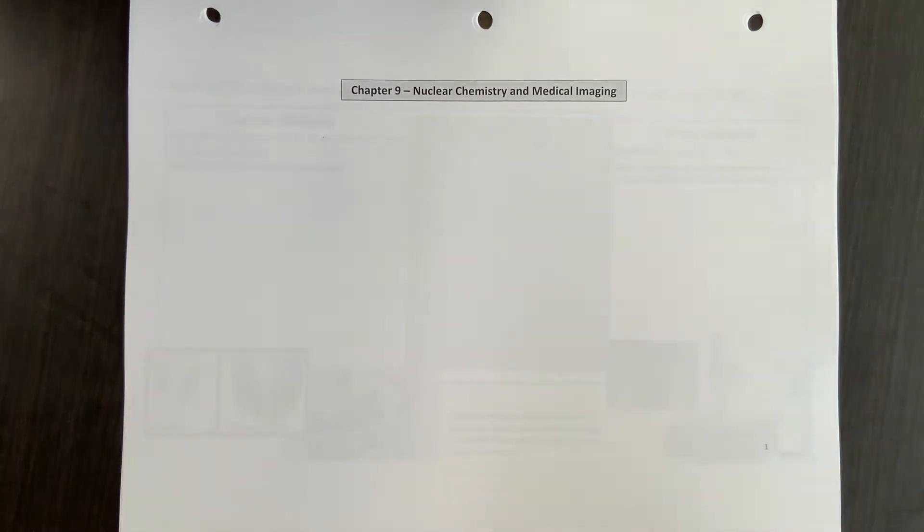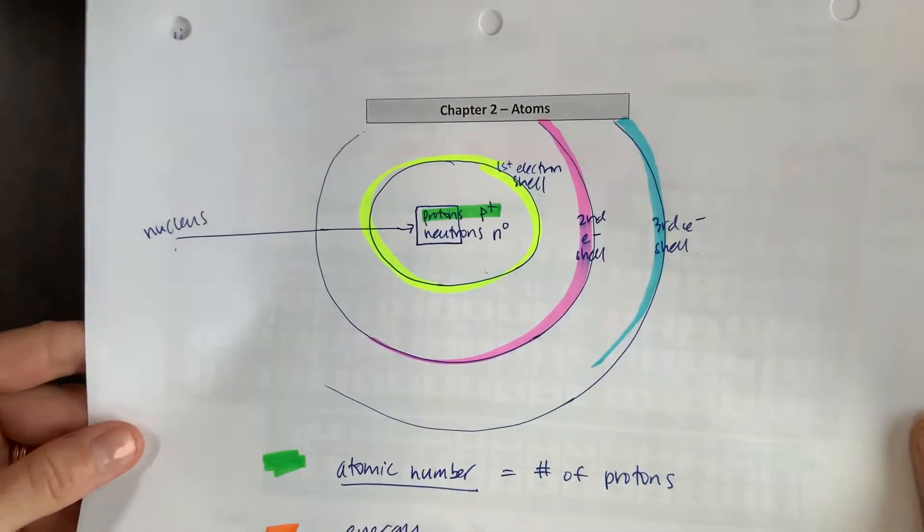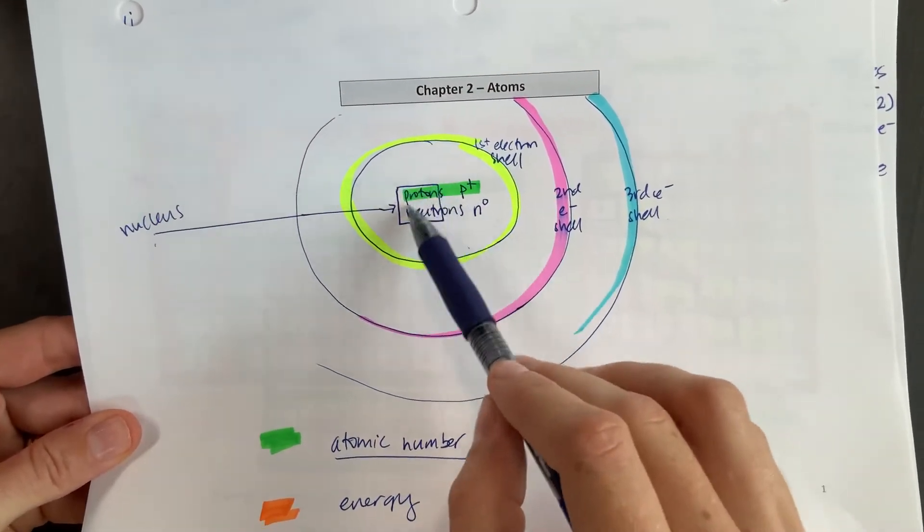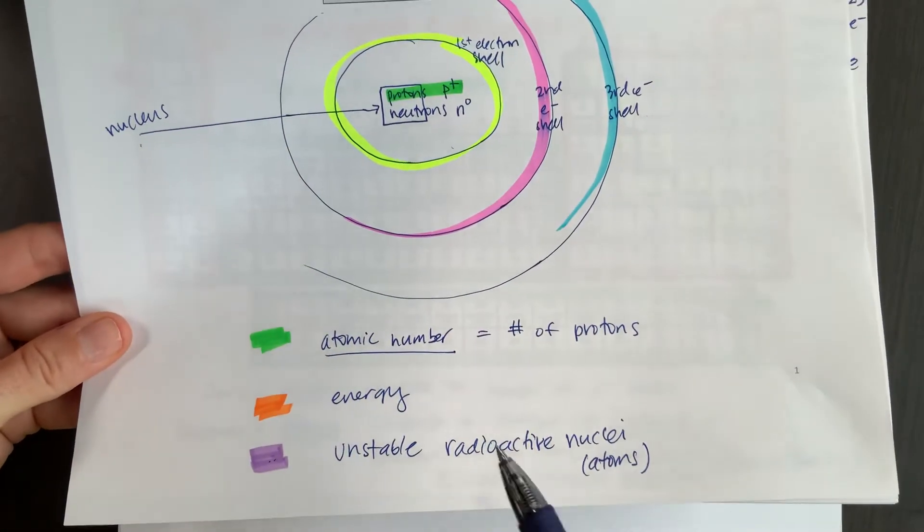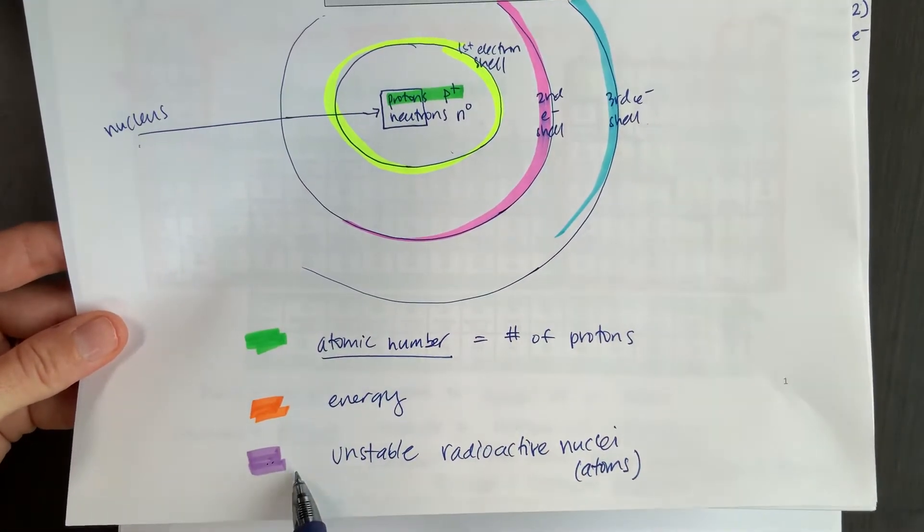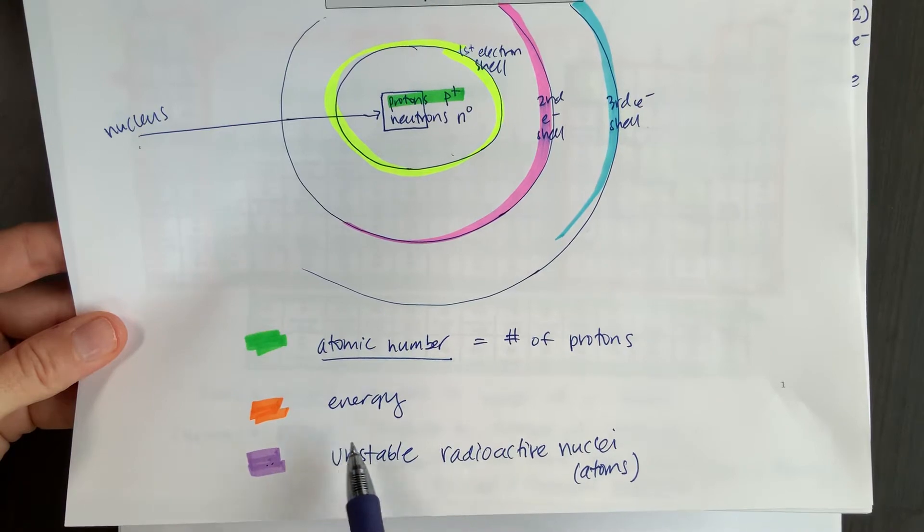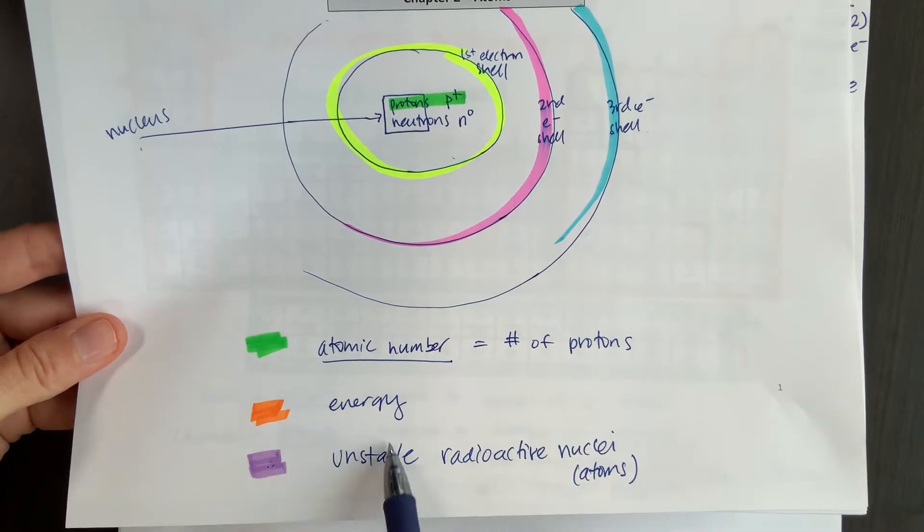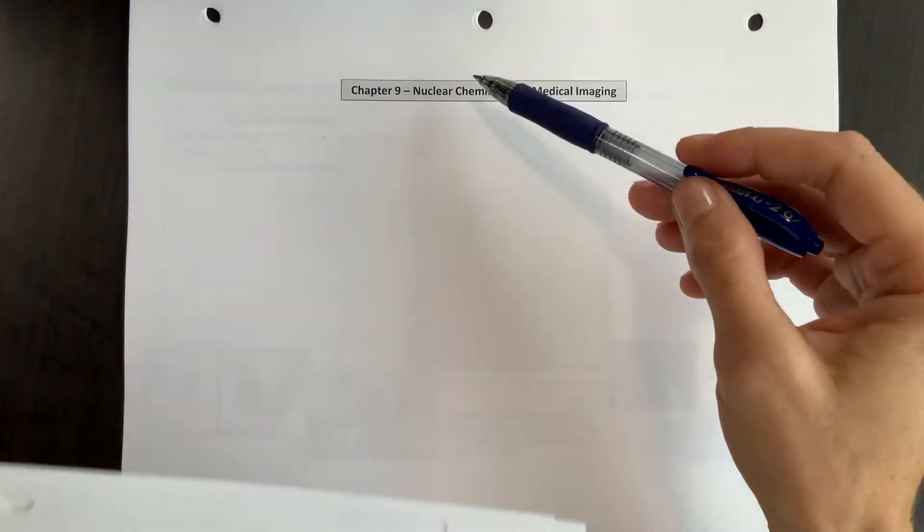And that nuclear should remind you of last chapter, where we talked in chapter two about the nucleus. And in chapter two, we also mentioned that there were some nuclei that were unstable or radioactive that give off energy. And that's going to be what we see applications of in chapter nine.